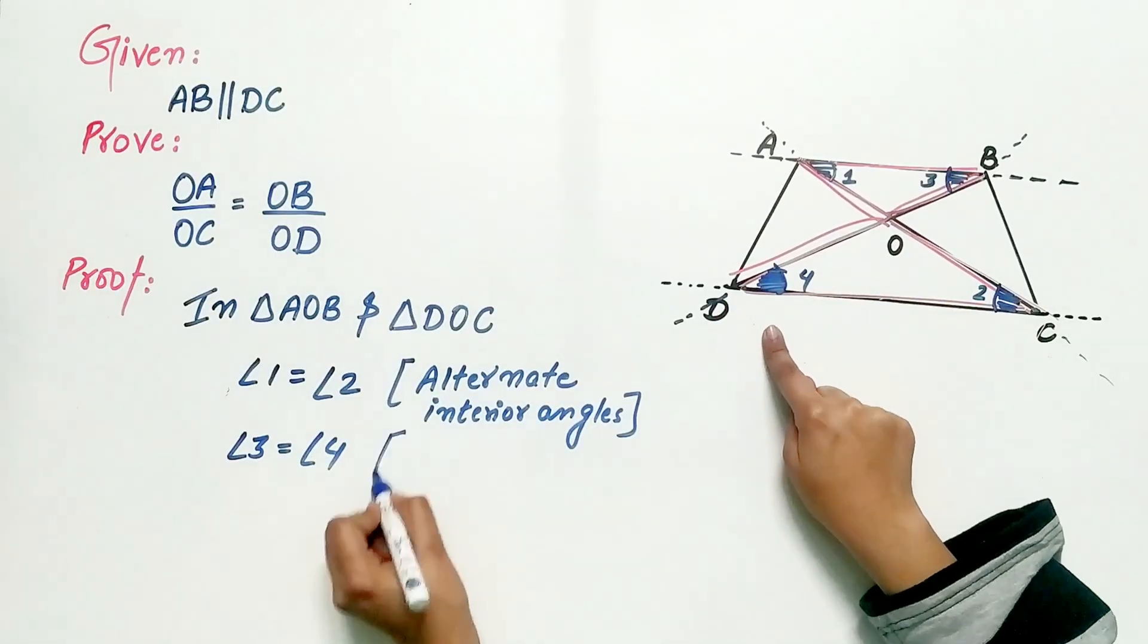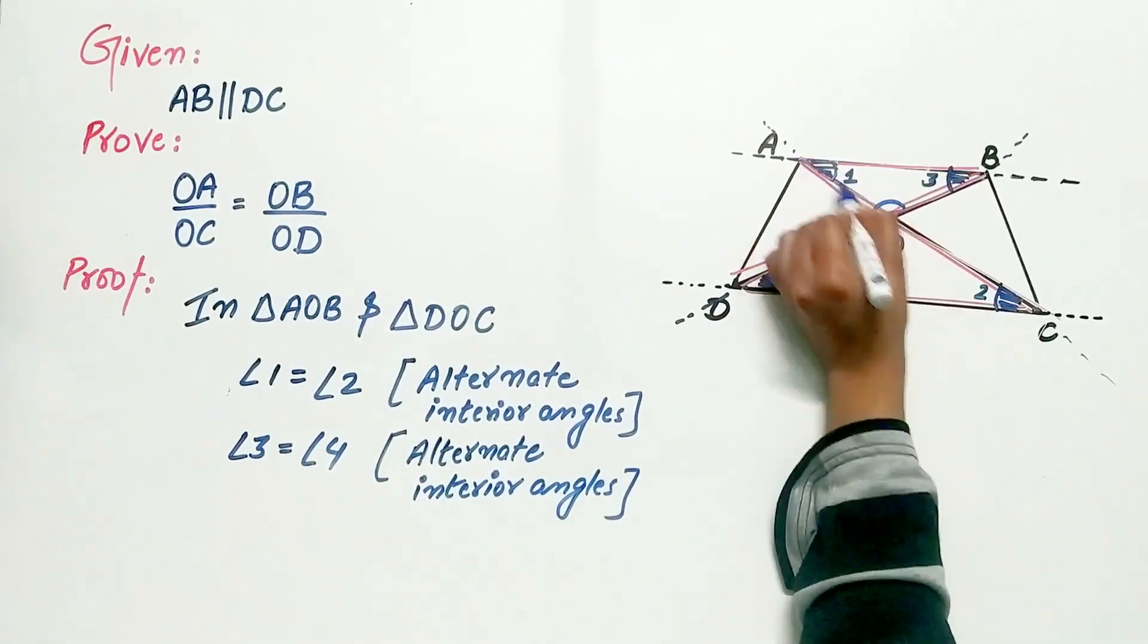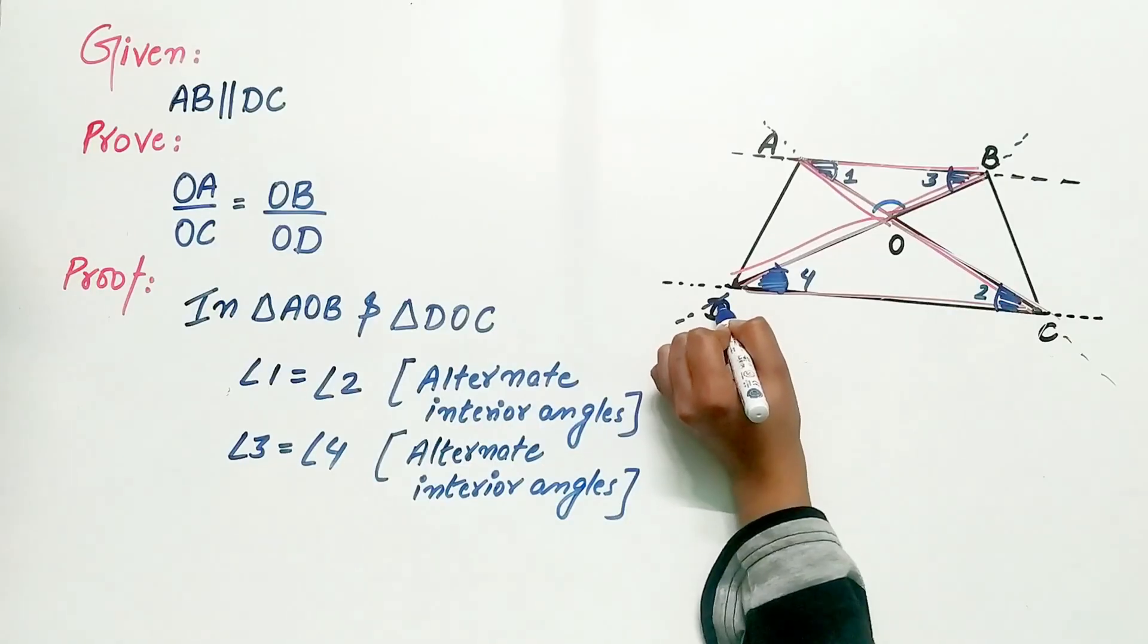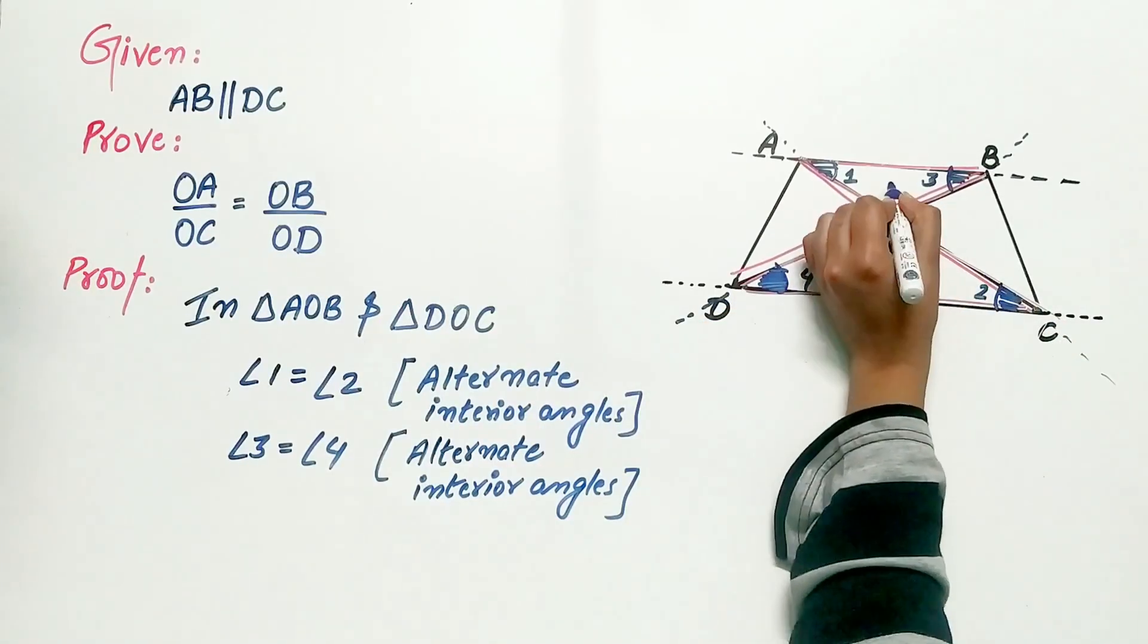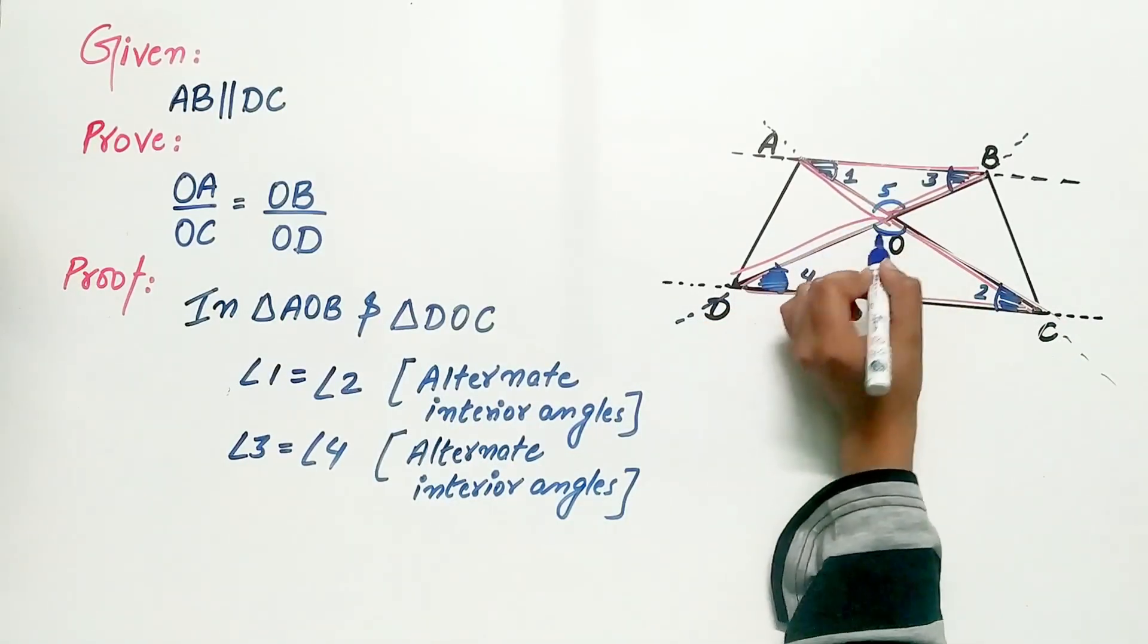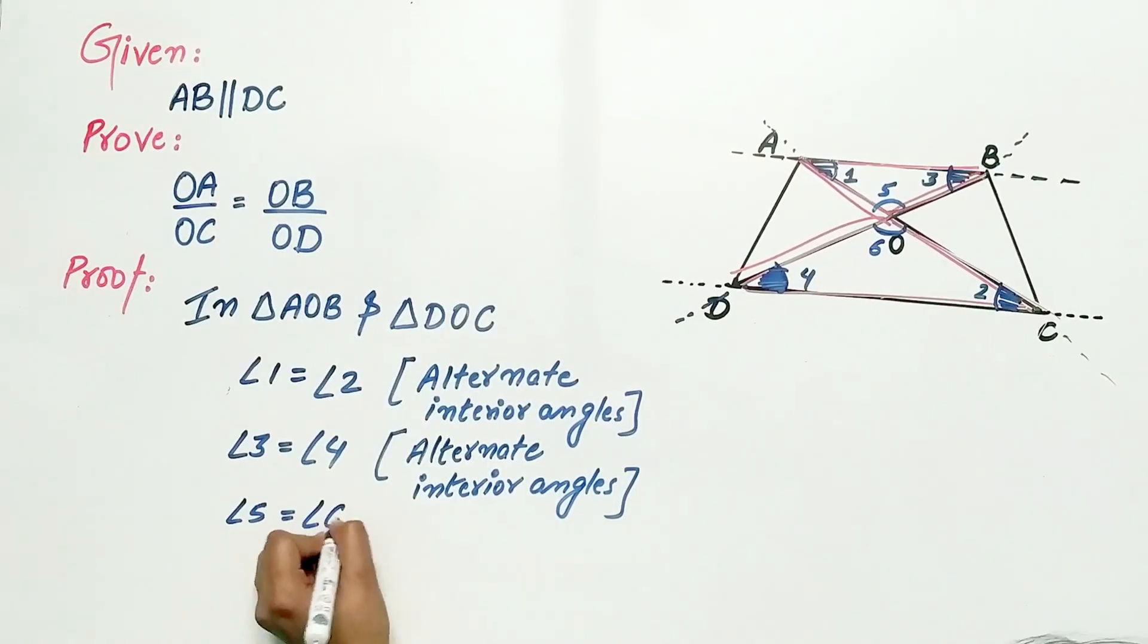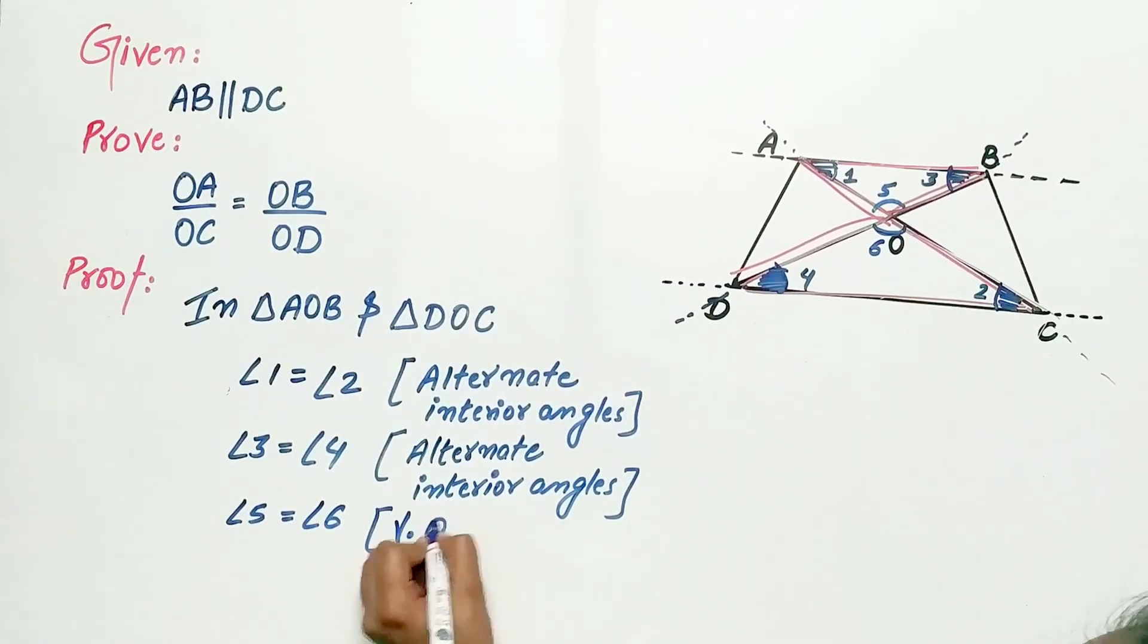Angle 3 is equal to angle 4 and angle AOB is equal to angle DOC by vertical opposite angles. Hence, angle 5 is equal to angle 6 by vertical opposite angles.